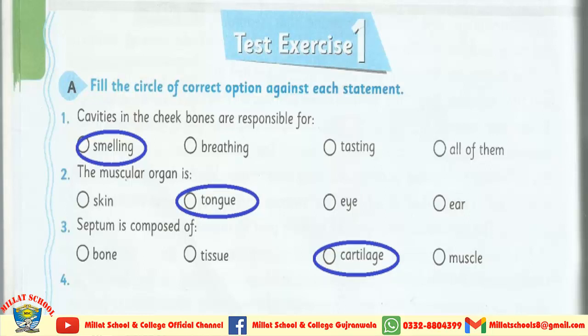Okay students، یہ short questions آپ لوگوں کو پہلے سے solve کروا دیے گئے ہیں، لیکن ایک دفعہ پھر MCQs کے نشان دیکھ لیجیے۔ First MCQ: Cavities in the cheek bones are responsible for smelling. The muscular organ is tongue. Septum is composed of cartilage.